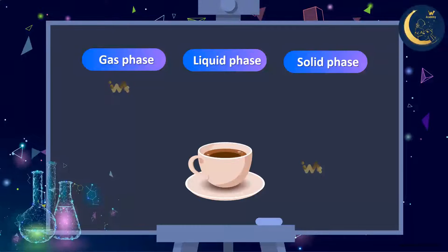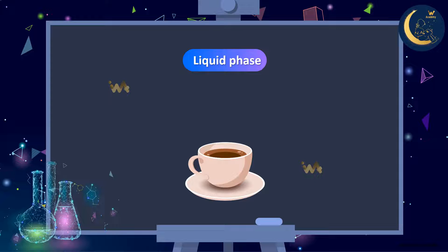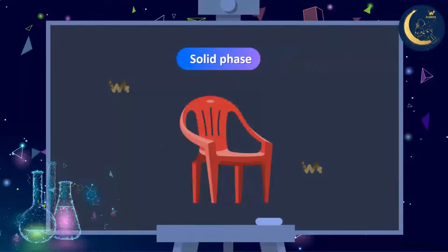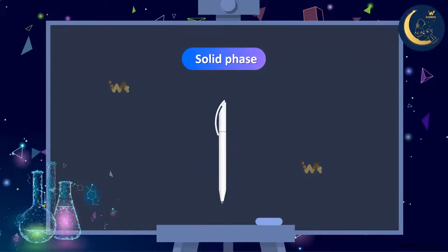What is the phase of the coffee inside the cup? Great job! The coffee is in the liquid phase. What about this chair? You guys are awesome! It has a distinct shape, so it's in the solid phase. Let's look at this pen — it is also in the solid phase.